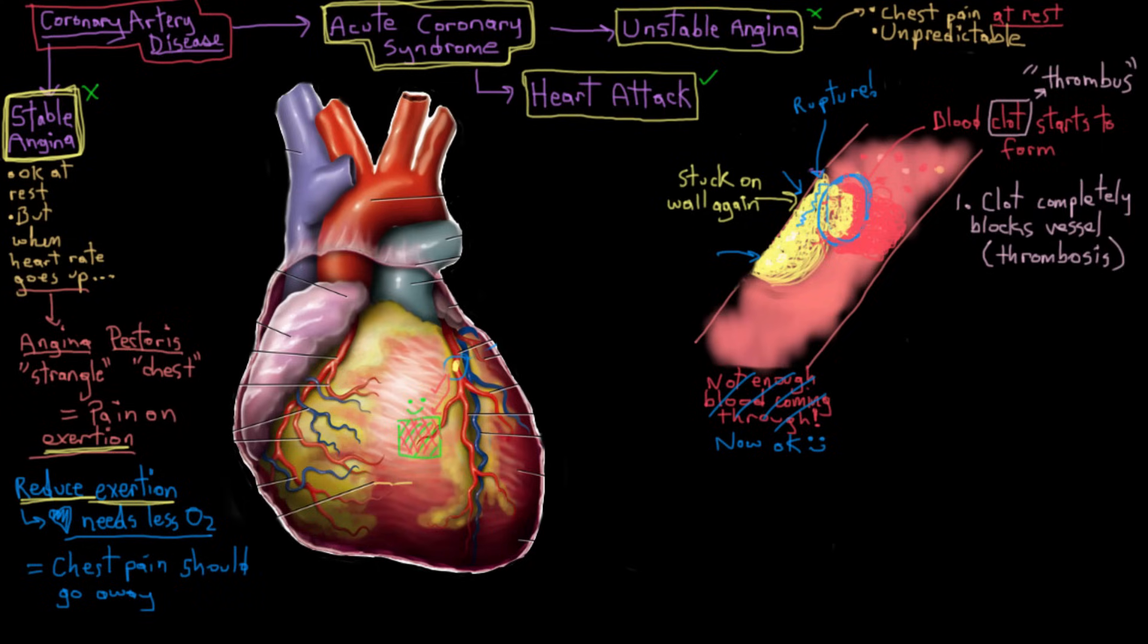Or it can break off. So this clot, this thrombus can break off, also called embolization. When a bit of a thrombus breaks off, it's called embolization. So it can embolize and float downstream and block off a smaller blood vessel. This is it floating downstream and blocking off a smaller blood vessel.